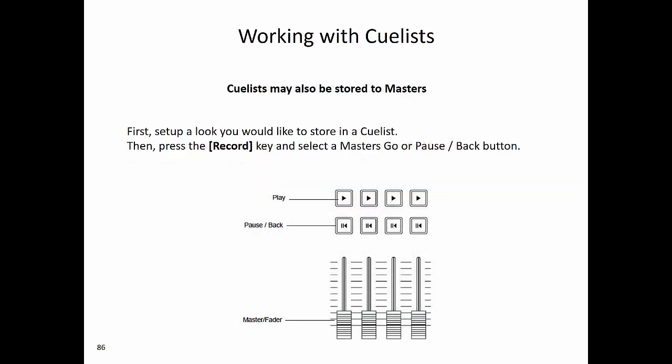Cue lists may also be stored to masters or faders. Again, first set up a look you would like to store in a cue list. Then press the record key and select a master's go or pause back button. This will not only create the cue list and the cue, but it will assign it to the playback master at the same time.